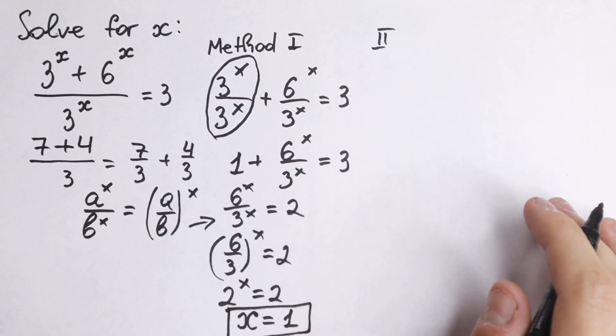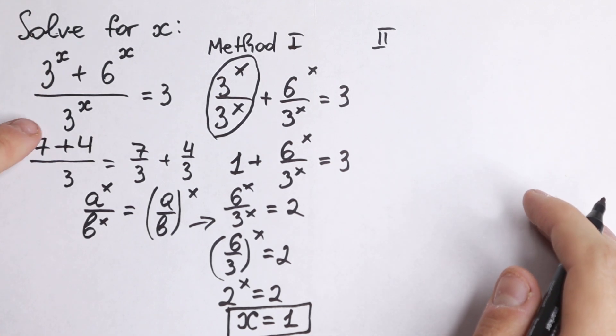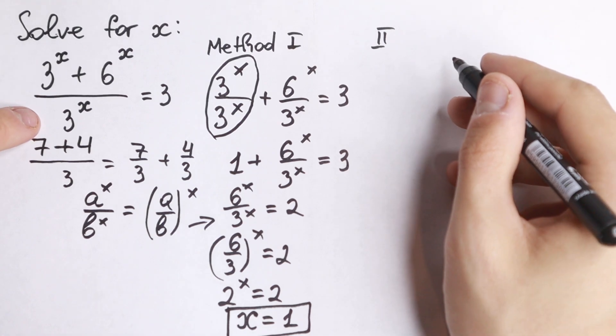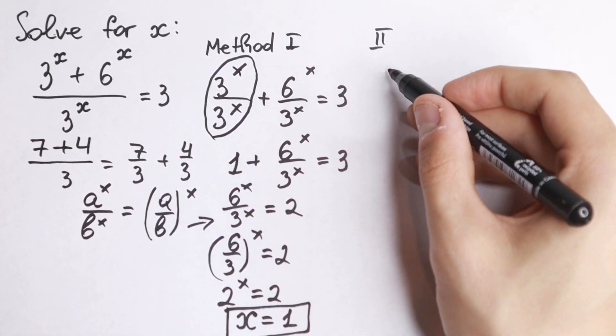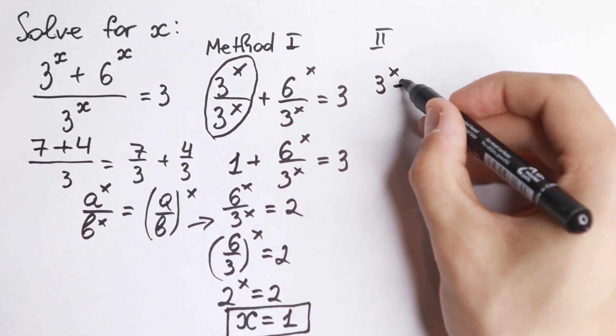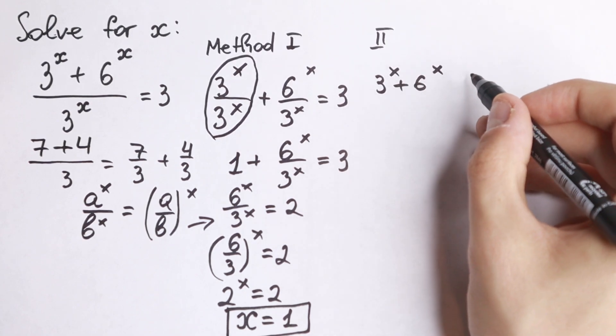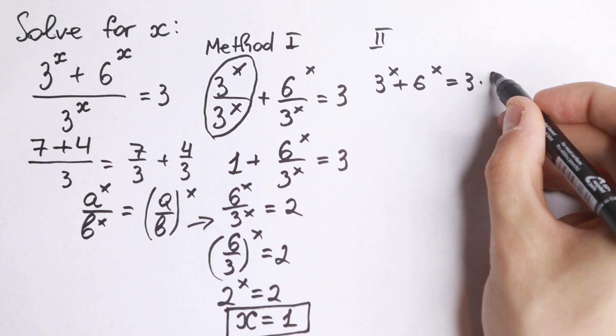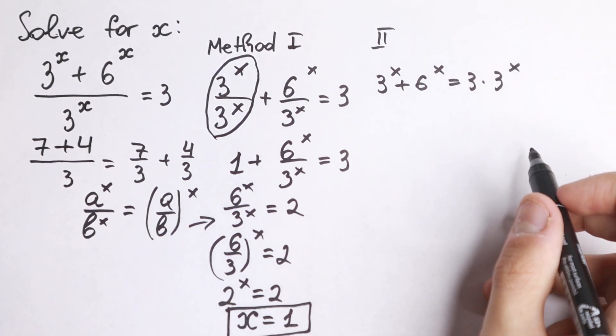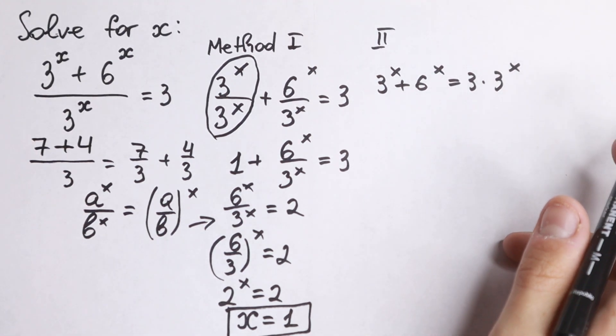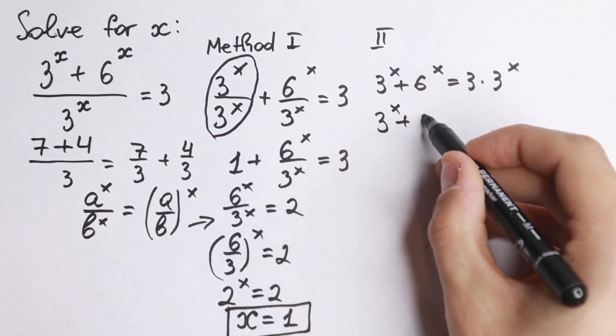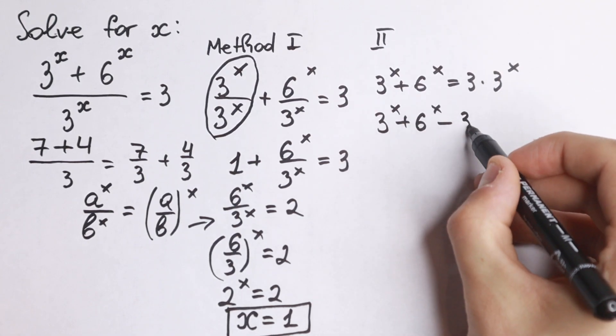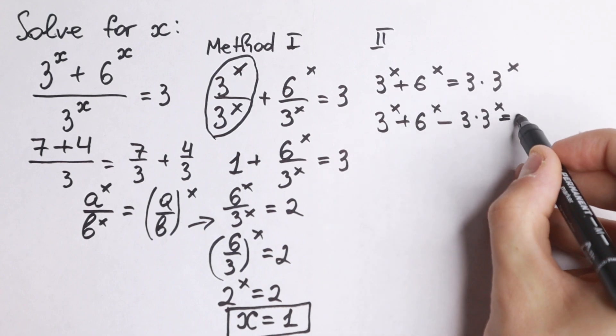We'll have a really good second method. For example, let's multiply both sides by 3 to the x. We will cancel with this one and we'll have on the left hand side 3 to the x plus 6 to the x equal to 3 times 3 to the x. Let's bring all these elements on the left hand side. 3 to the x plus 6 to the x minus 3 times 3 to the x equal to 0.